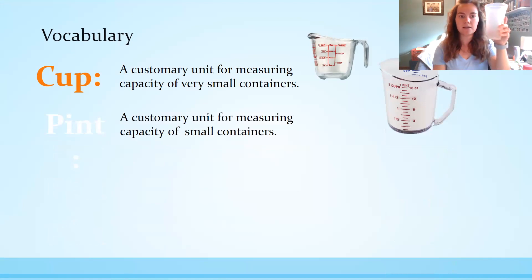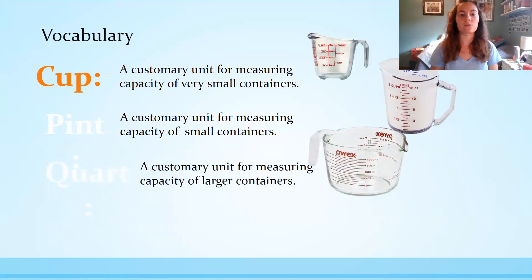And then a pint, a customary unit of measuring capacity for small containers. Also two cups in one pint. The next one is a quart and that is a customary unit for measuring larger containers. Remember there's four cups in one quart and two pints in one quart.